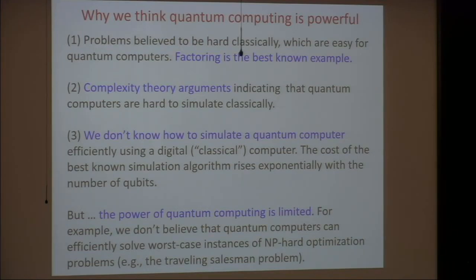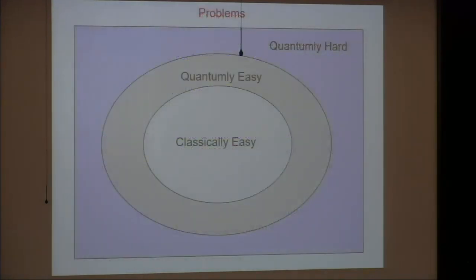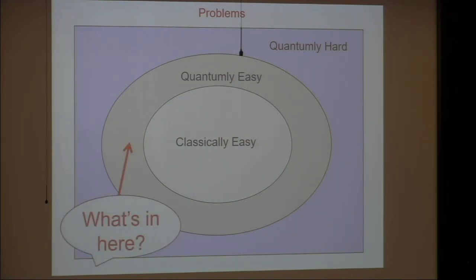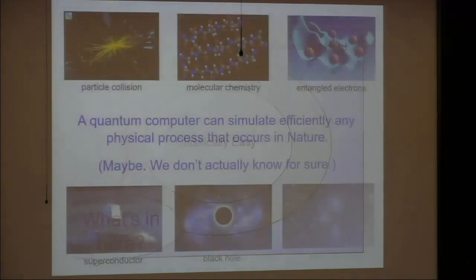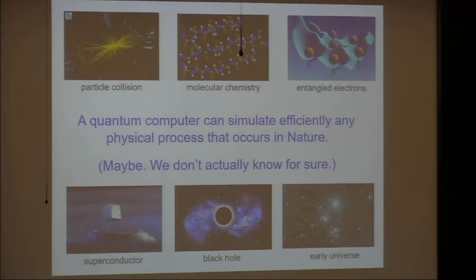Maybe the best reason we have to think quantum computing is powerful is that we just don't know how to simulate a quantum computer with a classical one — and it's not because we haven't been trying. Physicists and chemists have been trying for decades to simulate highly entangled systems of many particles, but the best algorithms still have exponential runtime in hard instances. We don't think quantum computers have unlimited power though; we don't expect them to find exact solutions to worst-case NP-hard problems efficiently. For a physicist like me, even if quantum computing couldn't do anything else, there would be a very strong incentive to realize large-scale quantum computing for simulating complex physical systems — things like strongly coupled quantum field theory, the interior of a black hole, or the very early universe.